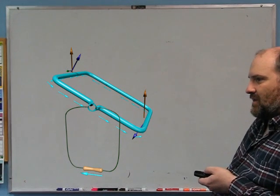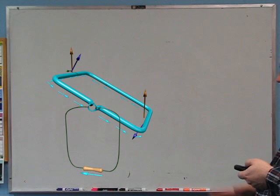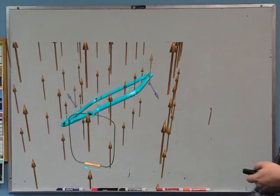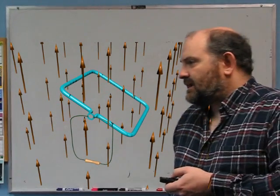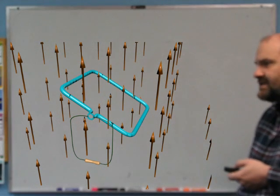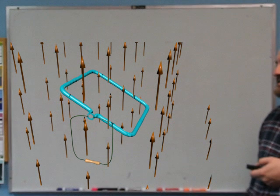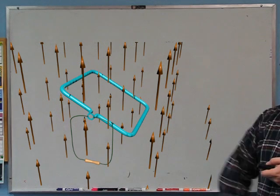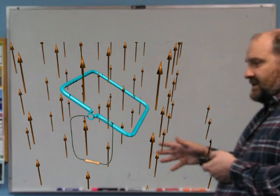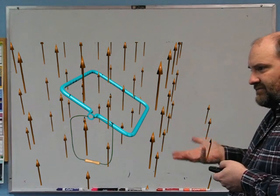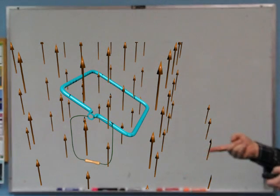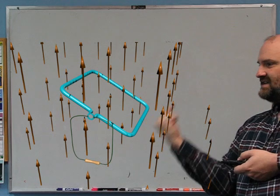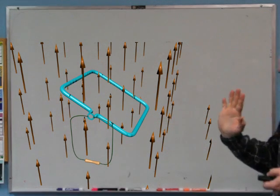The second half of the problem has to do with Lenz's Law. We'll fade out all the force arrows since we've already considered that part, then fade in the magnetic field. Lenz's Law tells us that the direction of the EMF around a loop is such that any magnetic field produced by the loop would offset the change in the magnetic flux. The flux is the amount of magnetic field crossing the area — related to the dot product. When they're parallel, it's maximum, and so on.